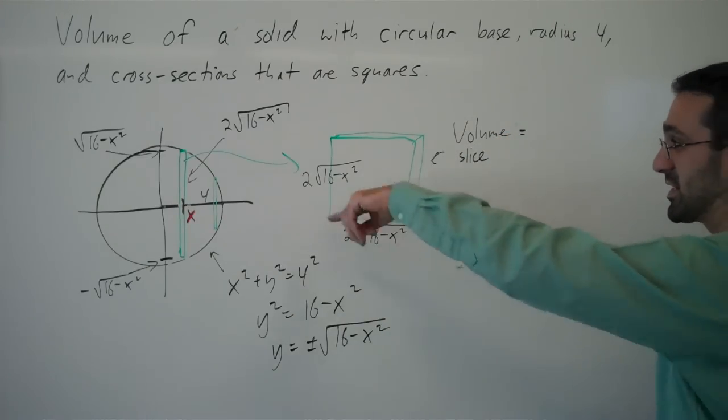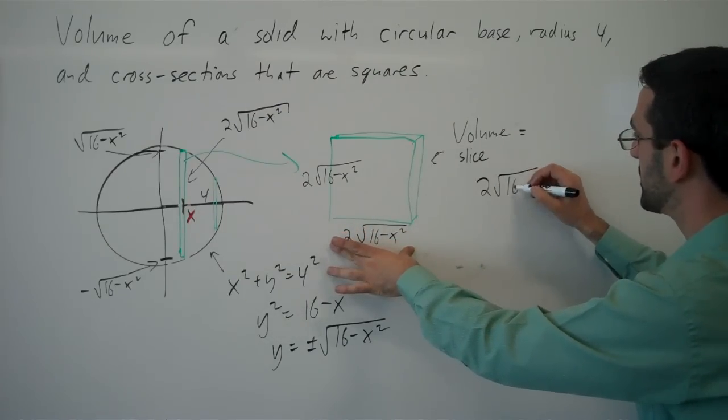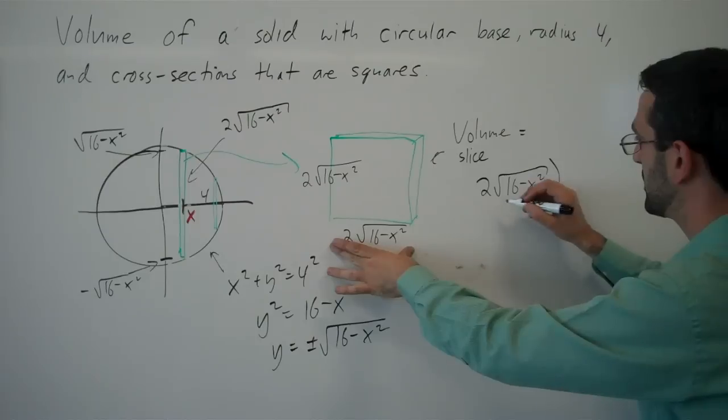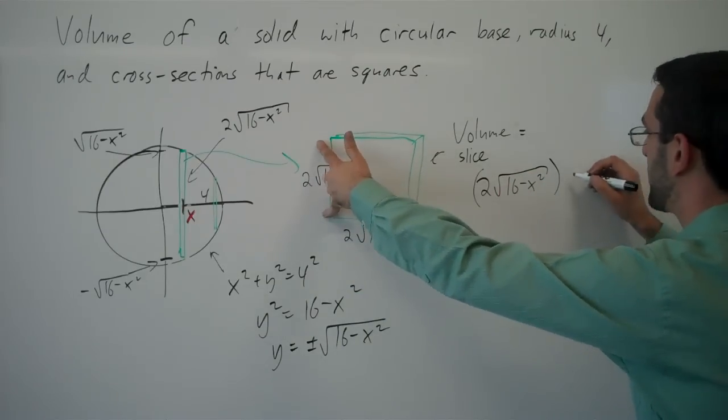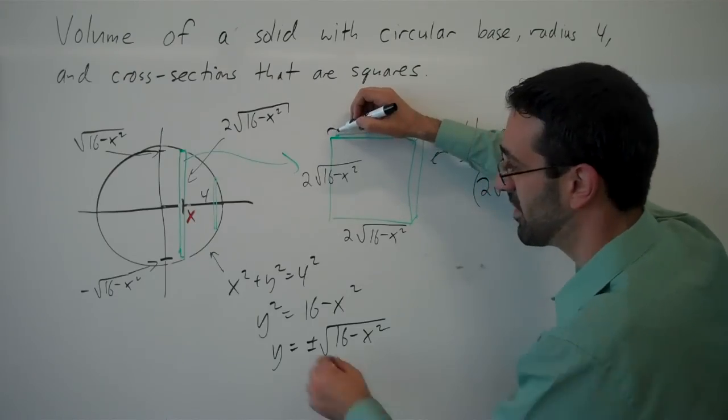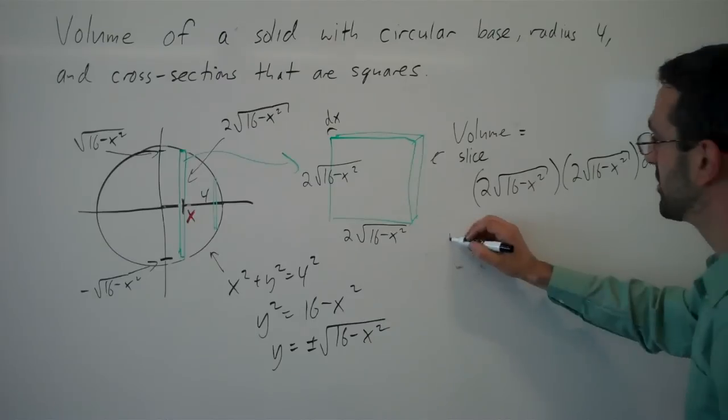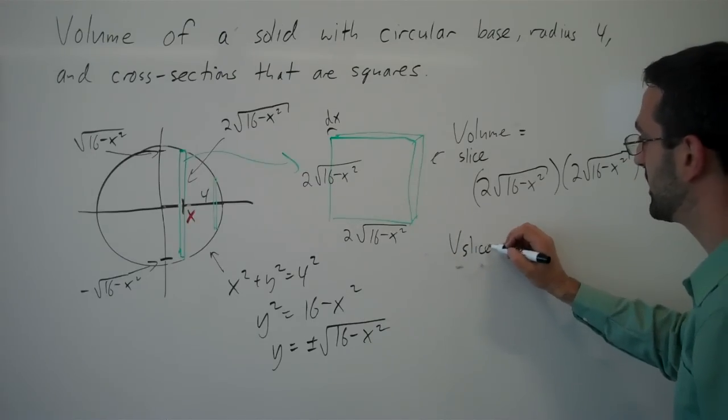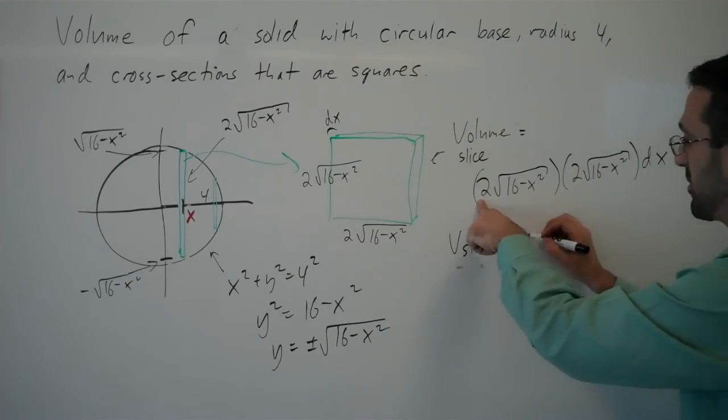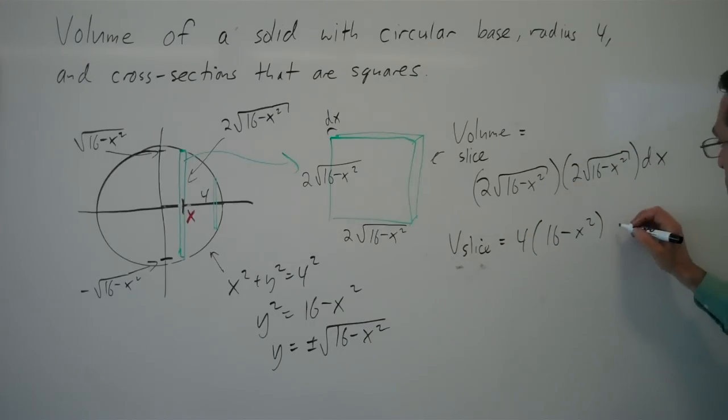So it's a rectangular solid. We have length 2 times root 16 minus x squared. We have height 2 times root 16 minus x squared. And we have a tiny thickness here corresponding to the thickness there, some little dx. So the volume of the slice, if we simplify this, will be 4 times 16 minus x squared, multiplying it, the square root goes away, dx.